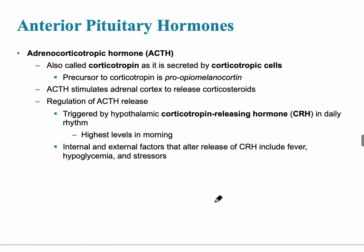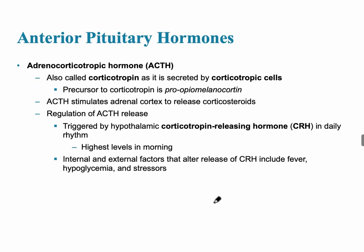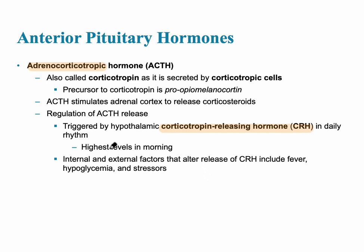The next hormone is the adrenocorticotropic hormone (ACTH), which affects the adrenal cortex. There is a hormone from the hypothalamus that controls its release from the anterior pituitary, called corticotropin releasing hormone (CRH). CRH is released in a daily manner and is actually highest in the morning.